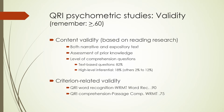Since the reliability of the QRI has been established as adequate, let's look at validity. Remember that when you look at validity coefficients, you want to see .60 or greater. First, we'll look at content validity, which is based on reading research. The authors make a strong argument for including both narrative and expository text because those are the kinds of reading materials students will encounter. They also link assessment of prior knowledge to comprehension from the research.